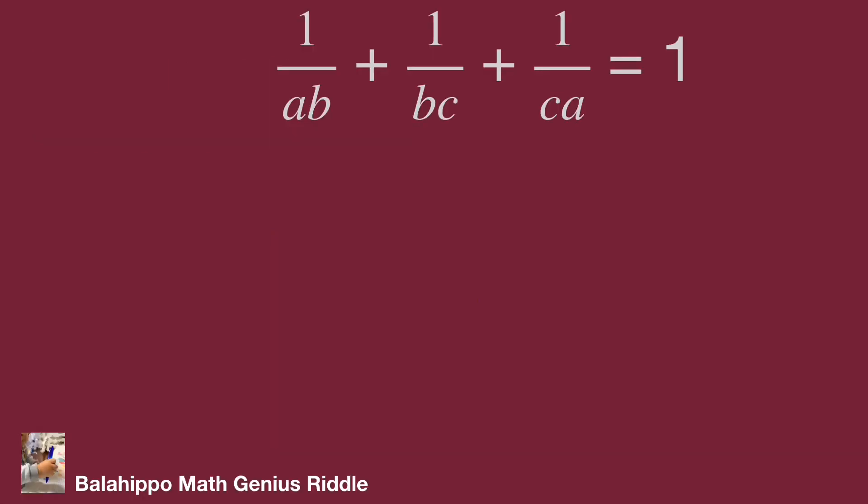The given equation is 1 over AB plus 1 over BC plus 1 over CA equals 1. To make this equation easier to work with, I multiply ABC to both sides of the equation.